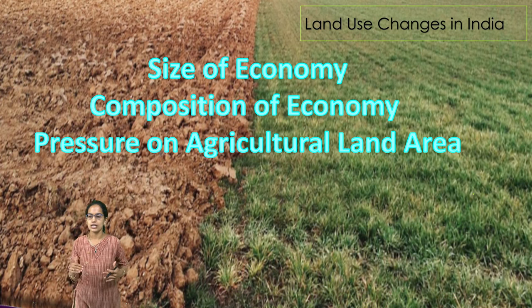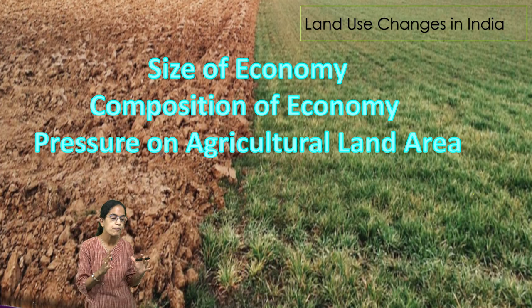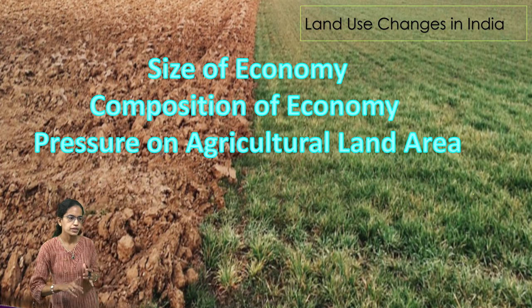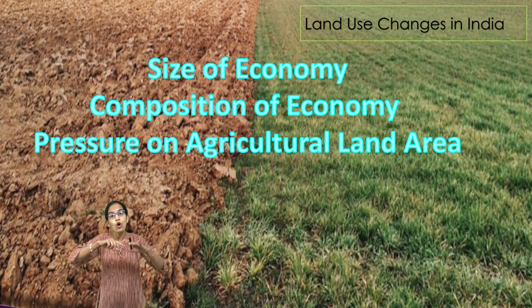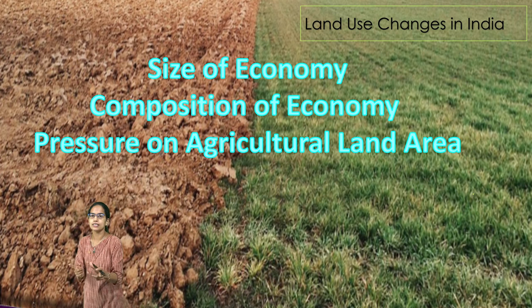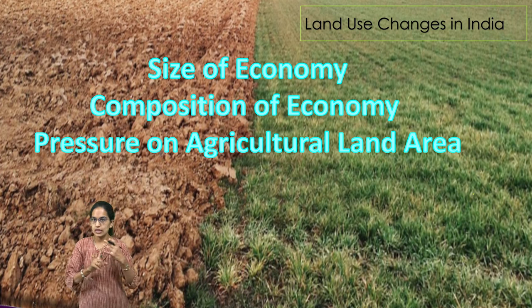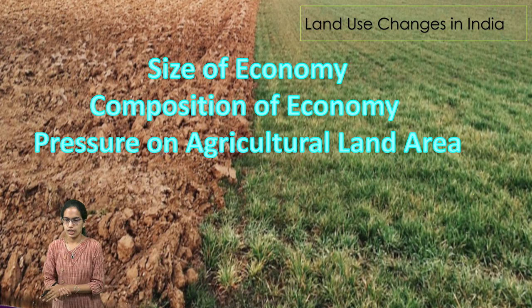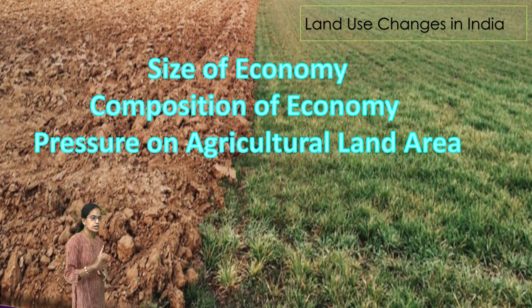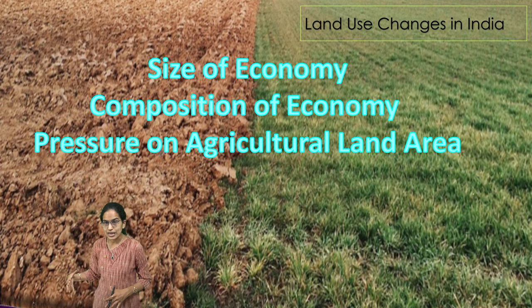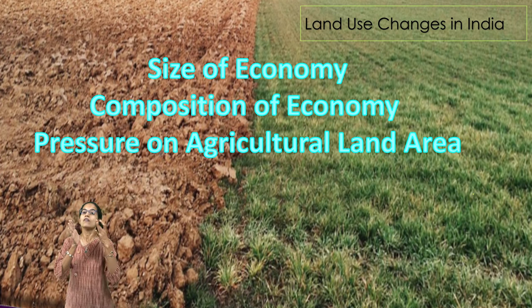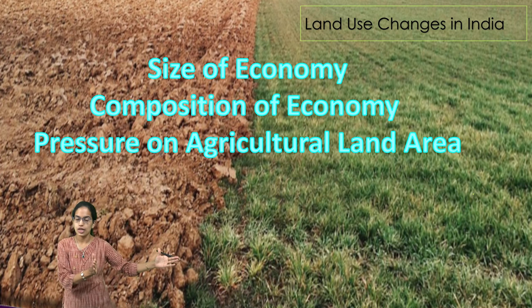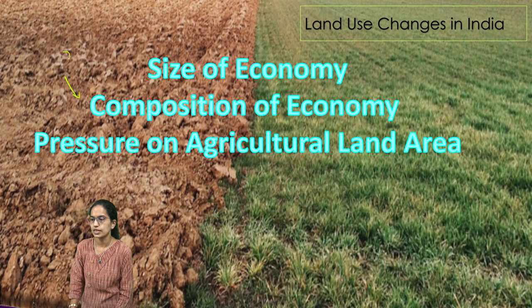Land use changes in India have brought about three major impacts. First, the size of the economy — measured by all goods and services produced — changes with income levels, technology, and pressure on land. Second, the composition of the economy matters: whether it is primarily a primary, secondary, or tertiary economy and how much GDP is generated from each sector.